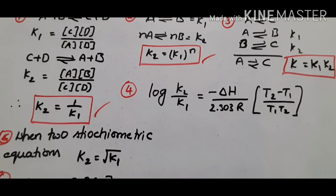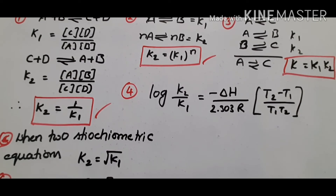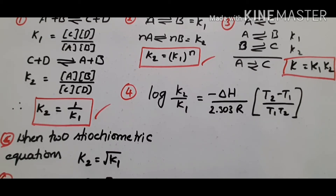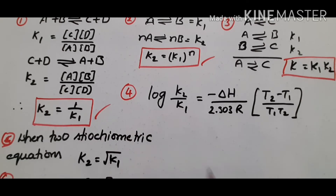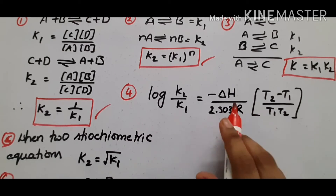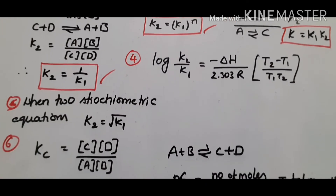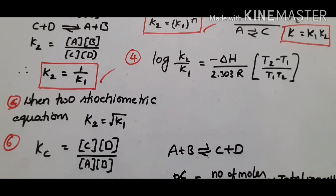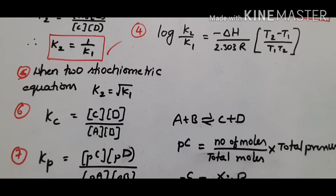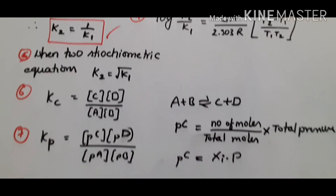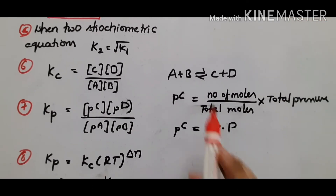The fourth relation is log K2 by K1, which deals with temperature dependence of equilibrium constants. All these relations are explained theoretically in my previous videos. Log K2 by K1 equals minus delta H by 2.303 R into (T2 minus T1) by T2. Here delta H is heat energy and R is the gas constant.